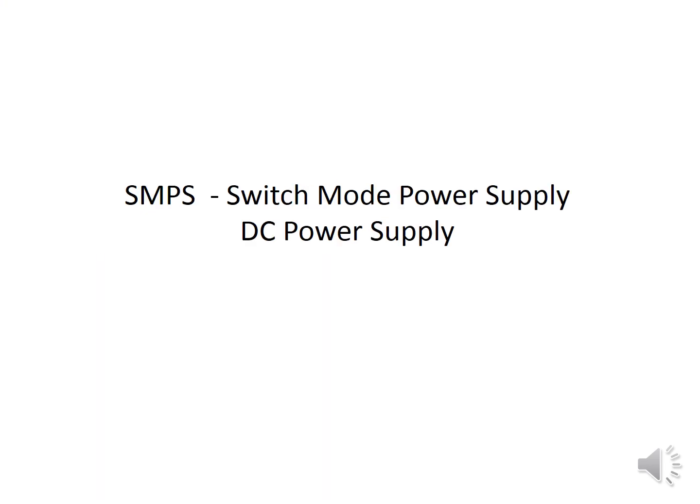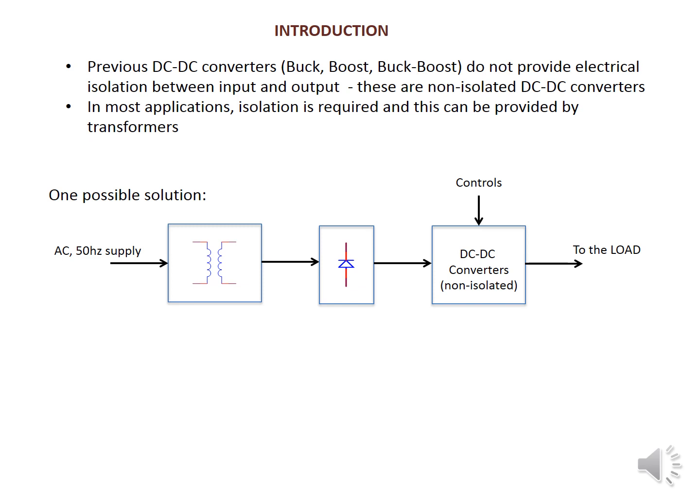You can see the switch mode power supply DC power supply. In the previous DC converters — direct converters such as buck, boost, and buck-boost — there is no electrical isolation between the input and the output. The input and output will share the same connection with no separation. These are non-isolated DC converters.